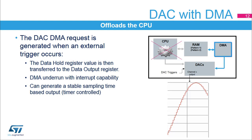Once a trigger is detected, the data hold register value is then transferred to the data output register. Then the DMA request is generated to obtain the new data for the data hold register. As the update of the output data register is initiated directly by the trigger signal, the DAC output signal will not have jitter, so that it can create a stable sampling time signal output, making it easy to filter out the sampling frequency.